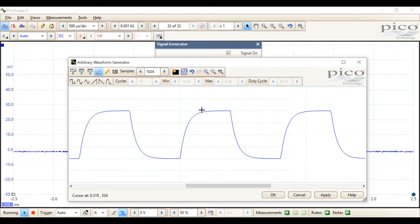And then select the drawing tool. And draw in a glitch like so. Which is a negative going glitch. And then press OK.